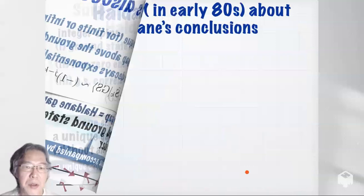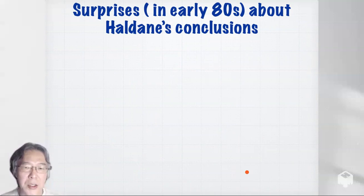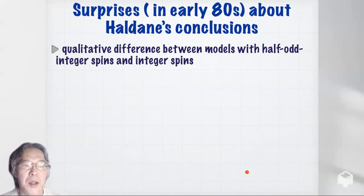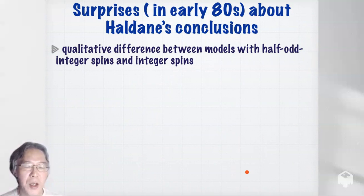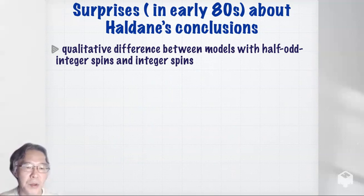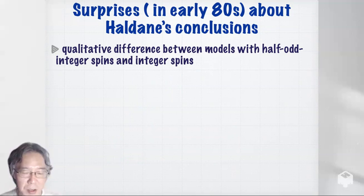This conclusion of Haldane's was rather surprising, especially in the early 1980s. The first big surprise is that there is a qualitative difference between models with half-integer spin and integer spin. If somebody says there is a critical value of spin — say spin larger than 5 something happens — that's like a usual phase transition. But saying the difference is between half-integer and integer is very strange.